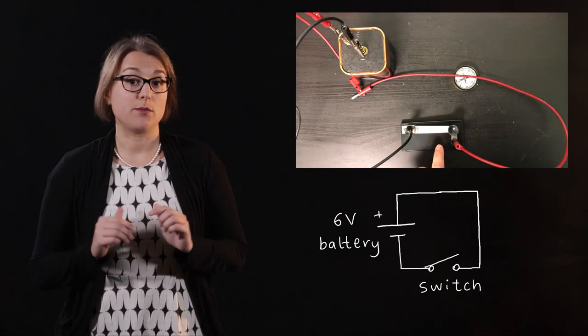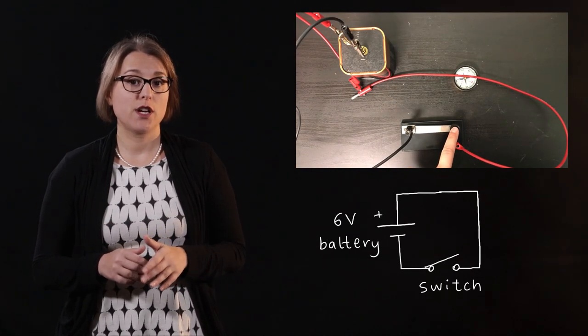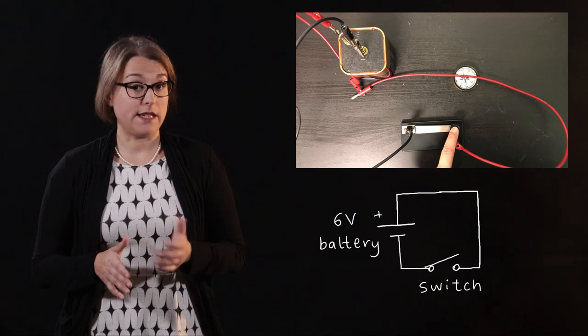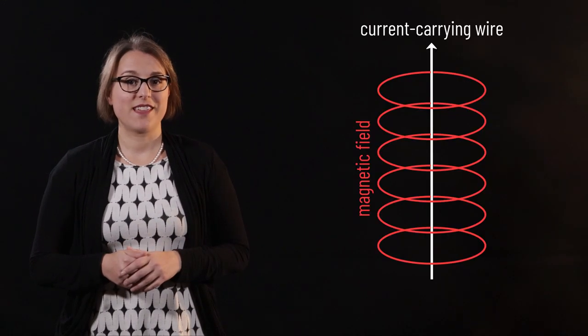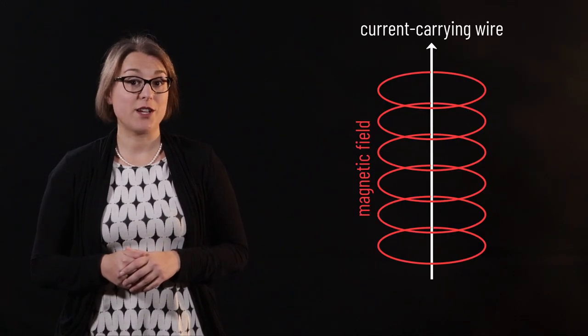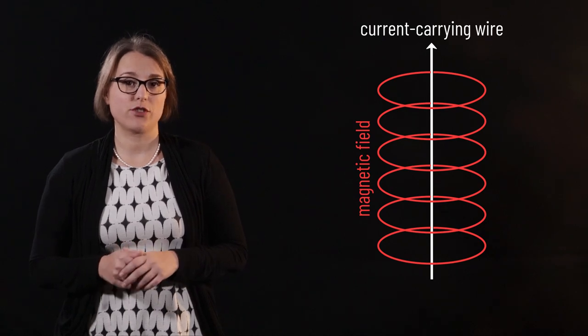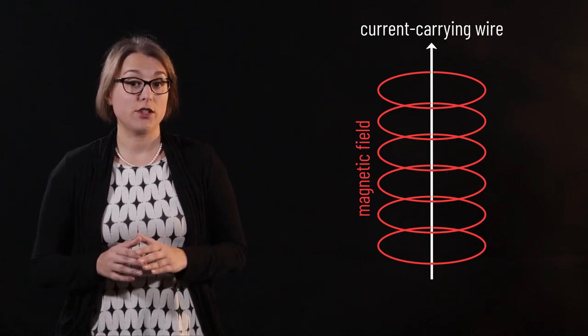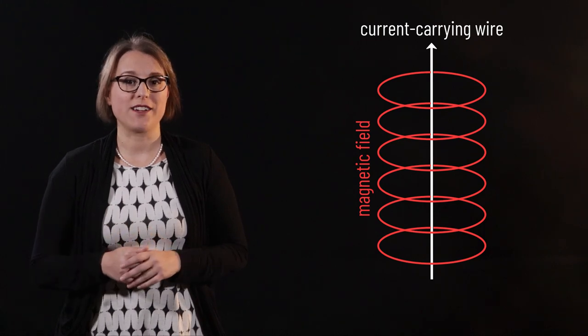When I place the compass below the wire and close the switch, we can see that the north pole points in the opposite direction. The magnetic field generated by a straight wire takes the shape of concentric circles. This means that the field points in different directions above and below the wire.